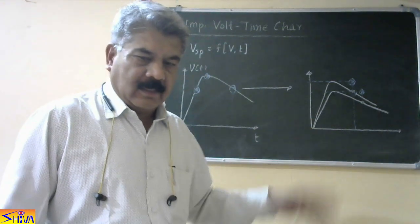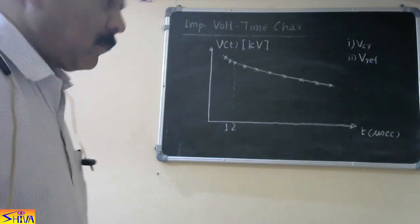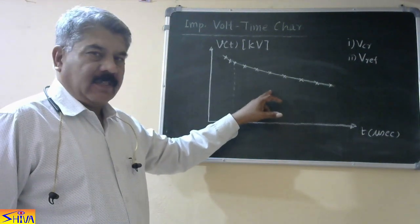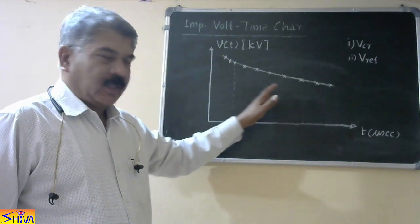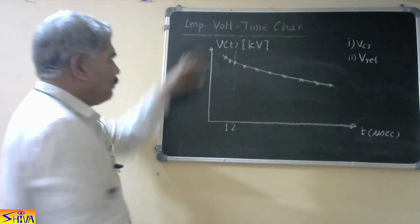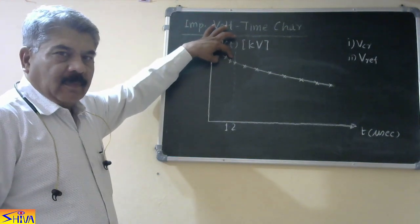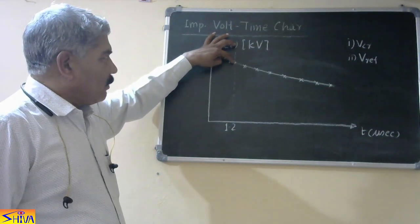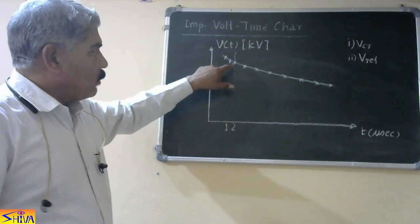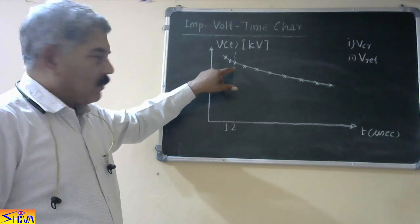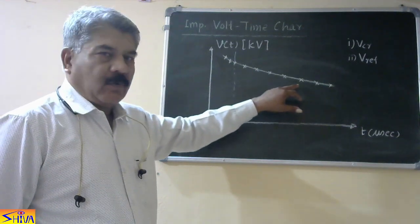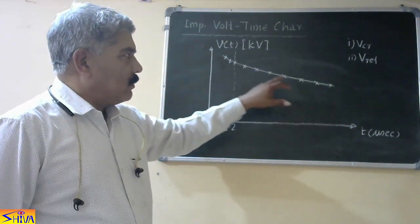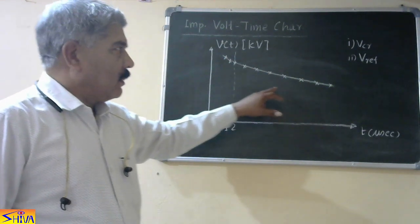The volt-time characteristic will look like this. We obtain different points and join them by a smooth curve. Two points show that spark over has occurred on the wave front. One point shows that spark over has occurred at the peak value — at 1.2 microseconds. All the remaining points show that spark over has occurred on the wave tail. So this is the impulse volt-time characteristic.